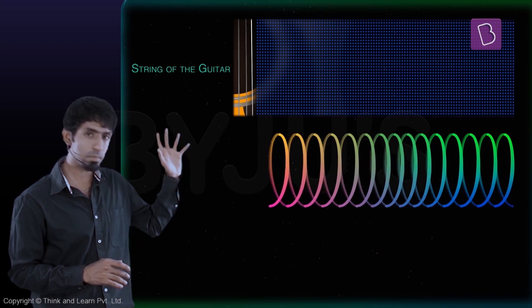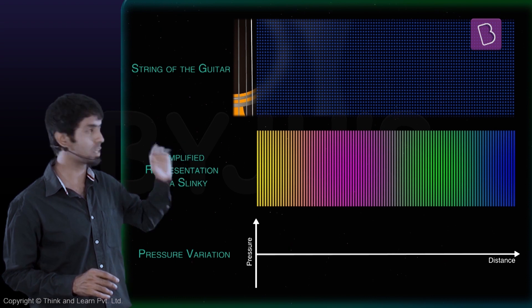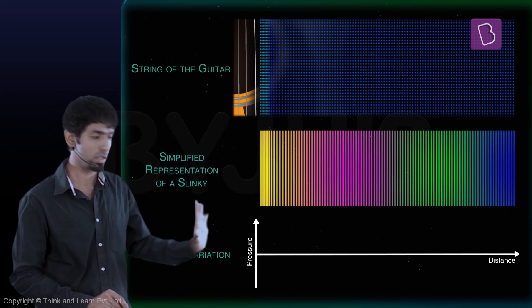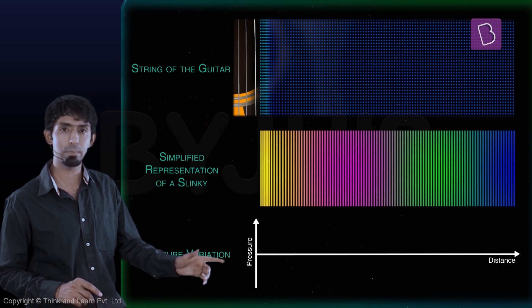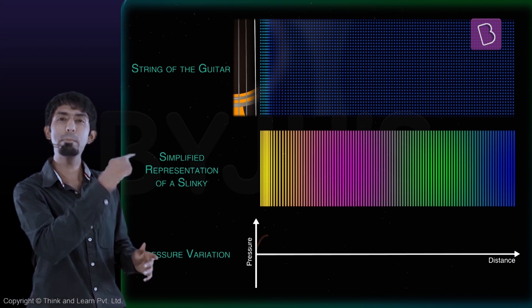The string of the guitar moves upwards and compresses air. That's equal to somebody pushing the slinky that way, and that's equal to somebody creating a pressure up in the air. That's going to be represented with a little peak in the graph as you can see.